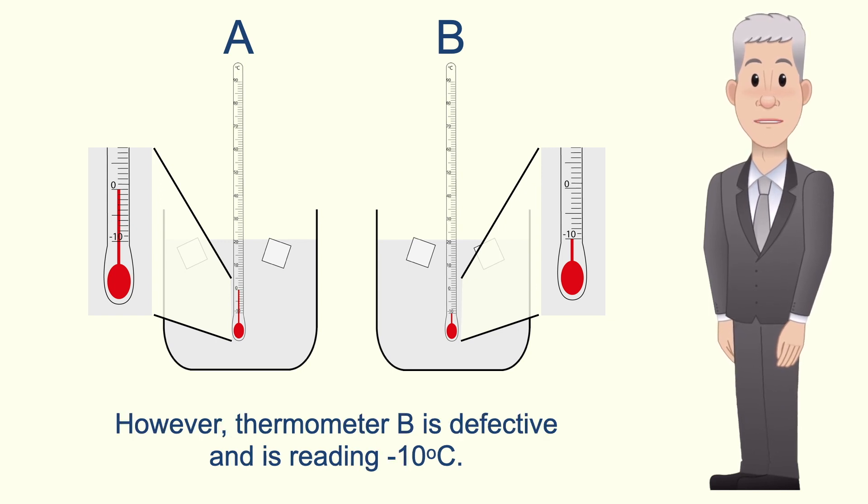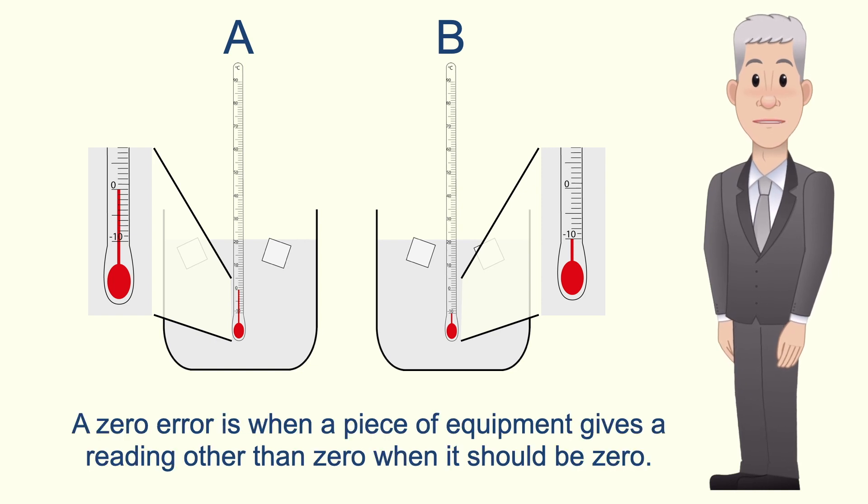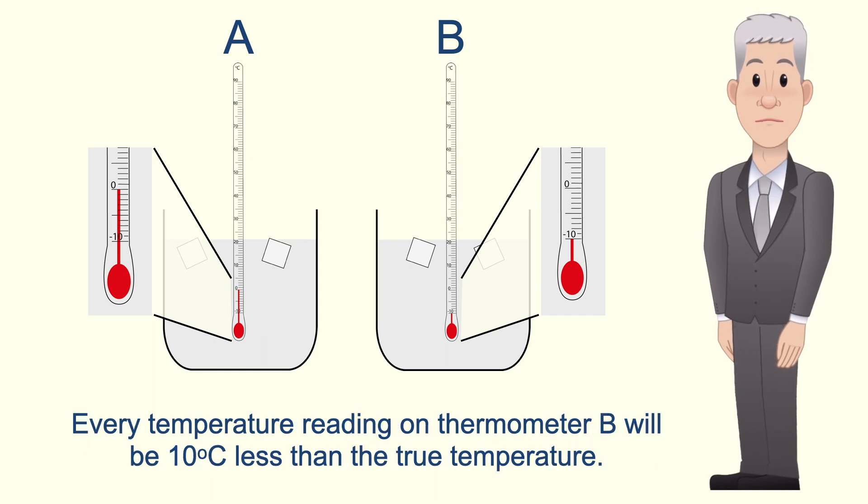However, thermometer B is defective and is reading minus 10 degrees celsius. Now scientists call this a zero error. A zero error is when a piece of equipment gives a reading other than zero when it should be zero. Every temperature reading on thermometer B will be 10 degrees celsius less than the true temperature.